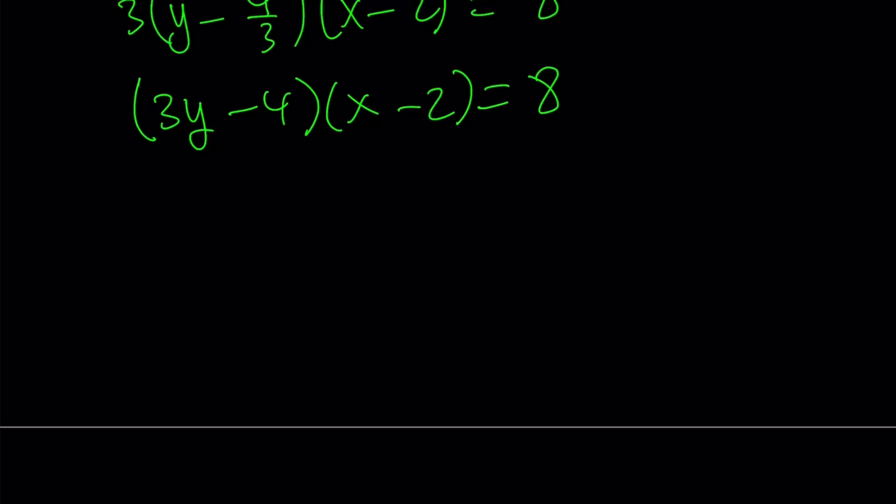And 8 is 2 to the third power. So it has 4 positive and 4 negative factors. And those are 1, 2, 4, and 8 with the plus minus signs. So there's 8 factors. We're going to consider each one.